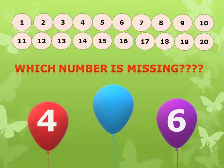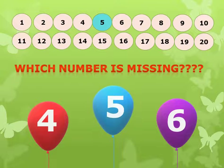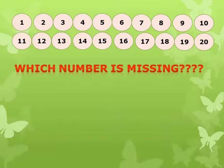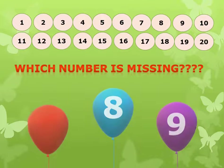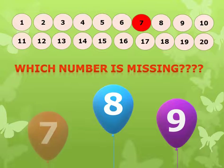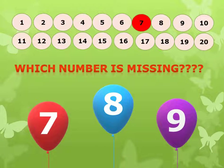Which number is missing? Missing is 5. Okay, very good. Now, which number is missing? Missing is 7. Very good.